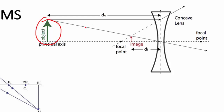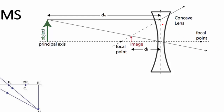With the object sitting on the principal axis, draw your first ray parallel to the principal axis hitting the lens axis. Because this is a diverging lens, you do NOT draw through the focal point on the other side — instead it diverges upward. To find the correct angle, draw a dotted line back through the focal point on the same side, then continue the ray upward from the lens. That gives you your first ray: parallel in, dotted through F, then diverging.